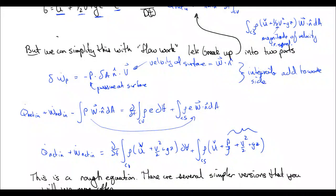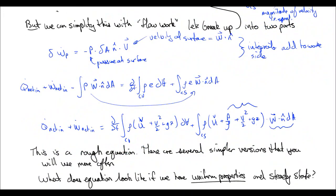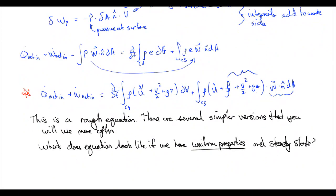What this is saying is how much energy — internal energy, pressure energy, kinetic energy, or potential energy — is carried across our control volume surface by our flow rate, w dot n-hat dA. This is one of our final forms — I'll star it. It's a rough equation, but there are several simpler versions we'll use more often. It's rough because we have to define pressure, velocity, and height across our surfaces and within our control volume, which is a lot to keep track of.